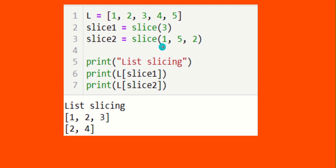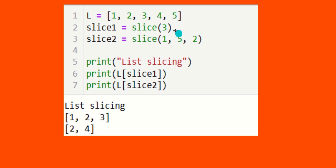For slice2 with start=1 and step=2: indexing goes 0 to 4 for the 5 elements. Starting at index 1 means starting at value 2, then incrementing by 2 steps gives value 4. So the output is 2 and 4. Incrementing 4 by 2 would give 6, but since 6 is not in the list and the stop value is at 5, slicing stops there.